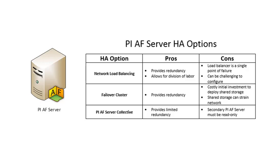An alternative is a failover cluster, which also provides redundancy, but has that costly initial investment to deploy that shared storage. And if your AF servers are far apart from one another, this can also strain your network. We also have PI AF server collectives, which provide limited redundancy because all of your secondary servers must be read-only copies of the primary. For these reasons, a network load balancer is our most commonly recommended PI AF server HA option.